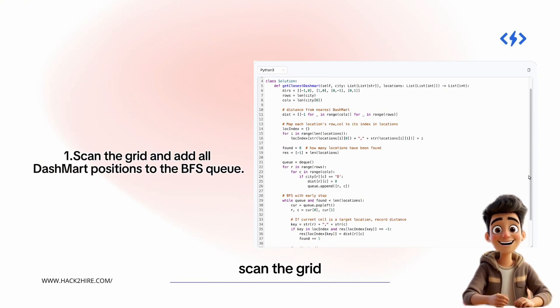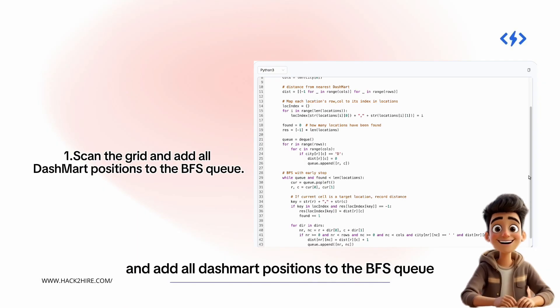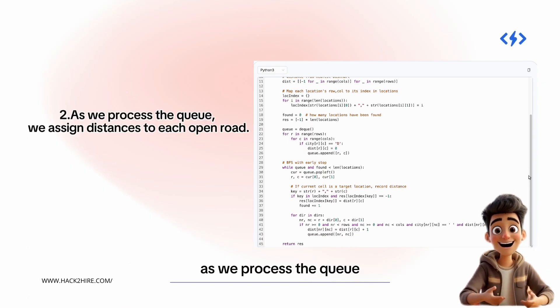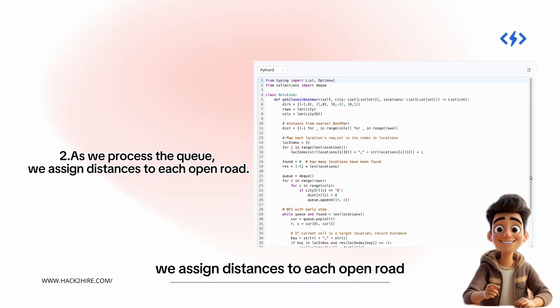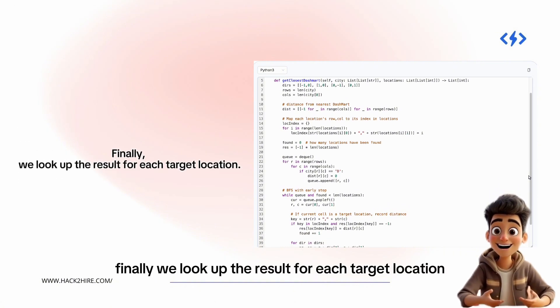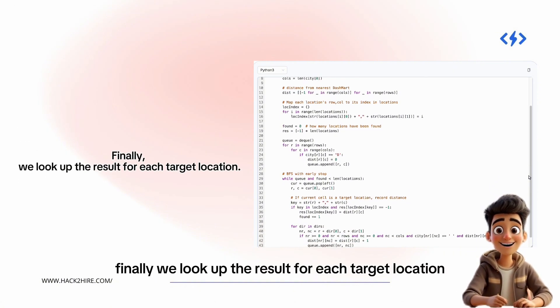Scan the grid and add all dashmart positions to the BFS queue. As we process the queue, we assign distances to each open road. Finally, we look up the result for each target location.